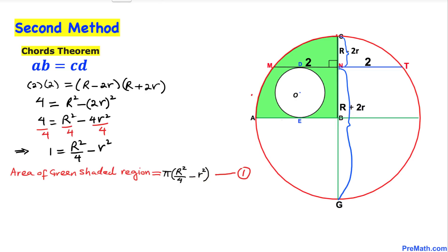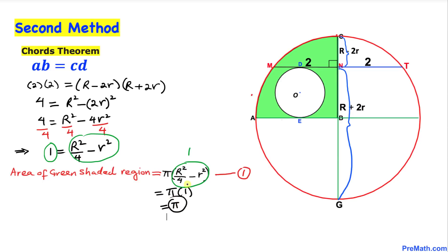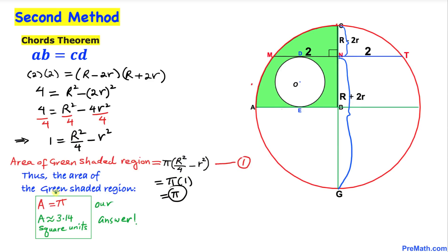Recalling Equation 1, the area of the green shaded region is π × (R²/4 − r²), and we just found R²/4 − r² = 1. So the area equals π × 1 = π, approximately 3.14 square units. That's our final answer. Thanks for watching — please don't forget to subscribe to the channel for more exciting videos!